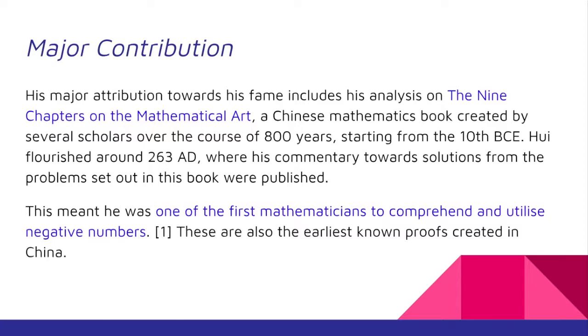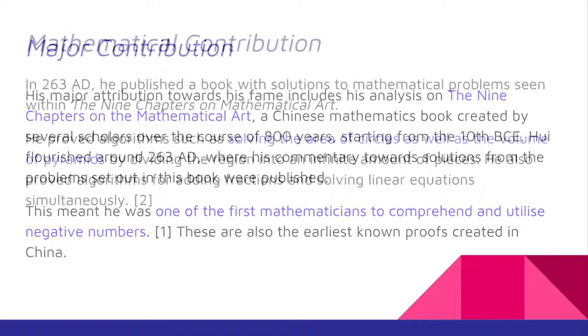Hui flourished around 263 AD, where his commentary towards solutions from the problems set out in this book were published. This meant he was one of the first mathematicians to comprehend and utilize negative numbers. These are also the earliest known proofs created in China.